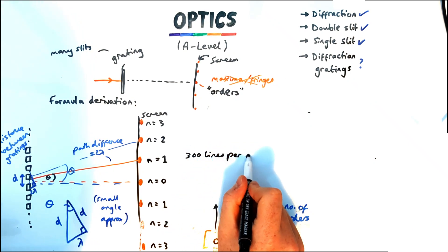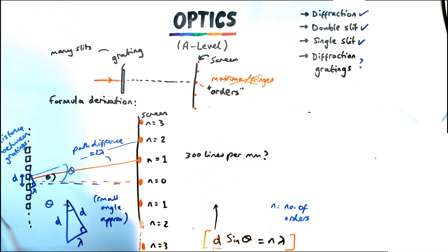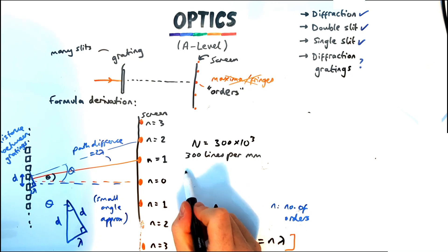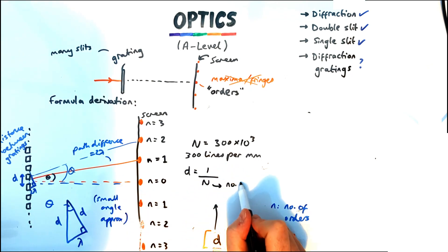And so what you've got to do to work this out is to convert to meters first. So in this example I've got 300 lines per millimeter that means 300 times by 10 to the 3 so that's 300,000 lines per meter and then I've got to do one divided by that which gives me the spacing between each one.